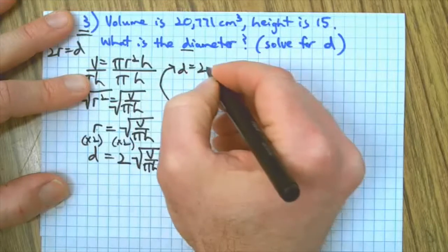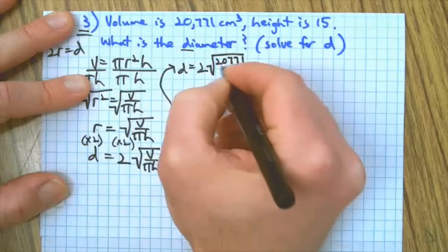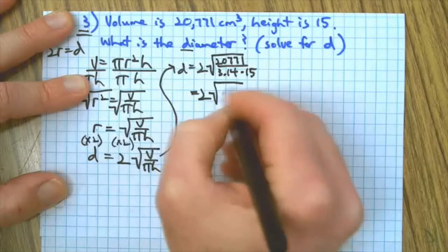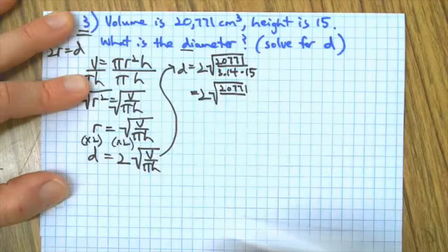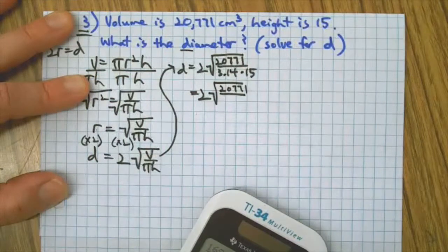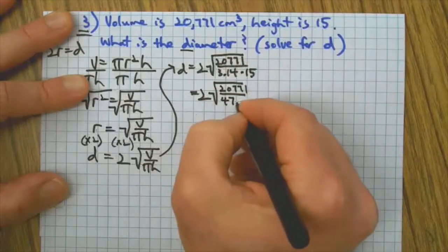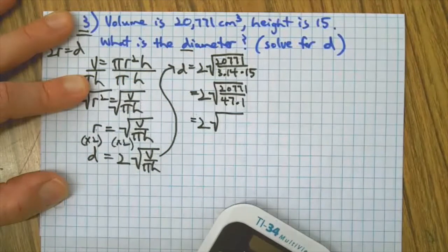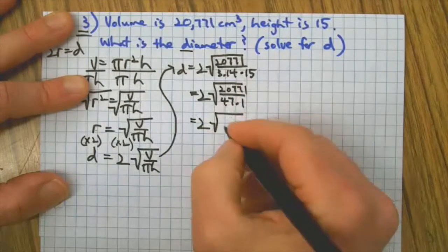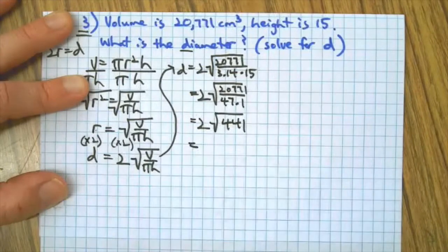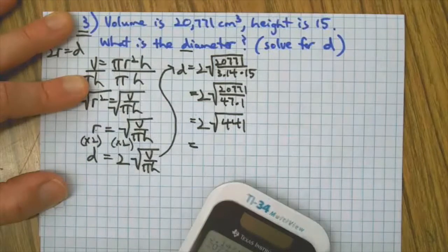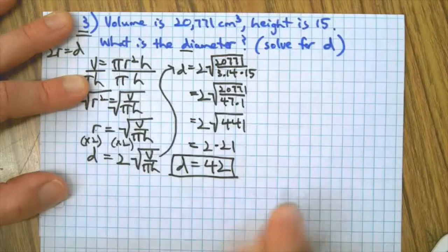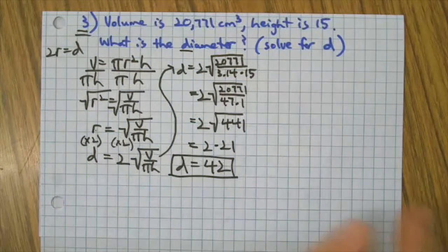Let's solve this. d = 2 × √(V/(πh)). We're going to make this happen: diameter equals two times the square root of 20,771 over 3.14 times 15. I'm going to round that off and call it 441. At this point you probably see that I came up with a nice pretty answer: square root of 441 is 21, which means the diameter for this problem is 42.